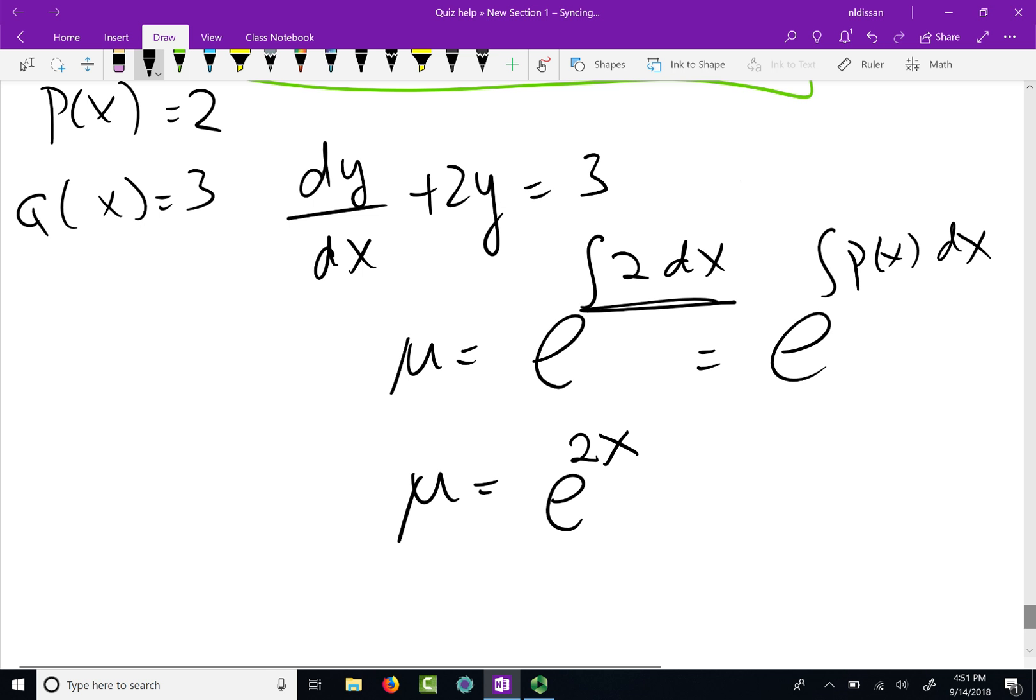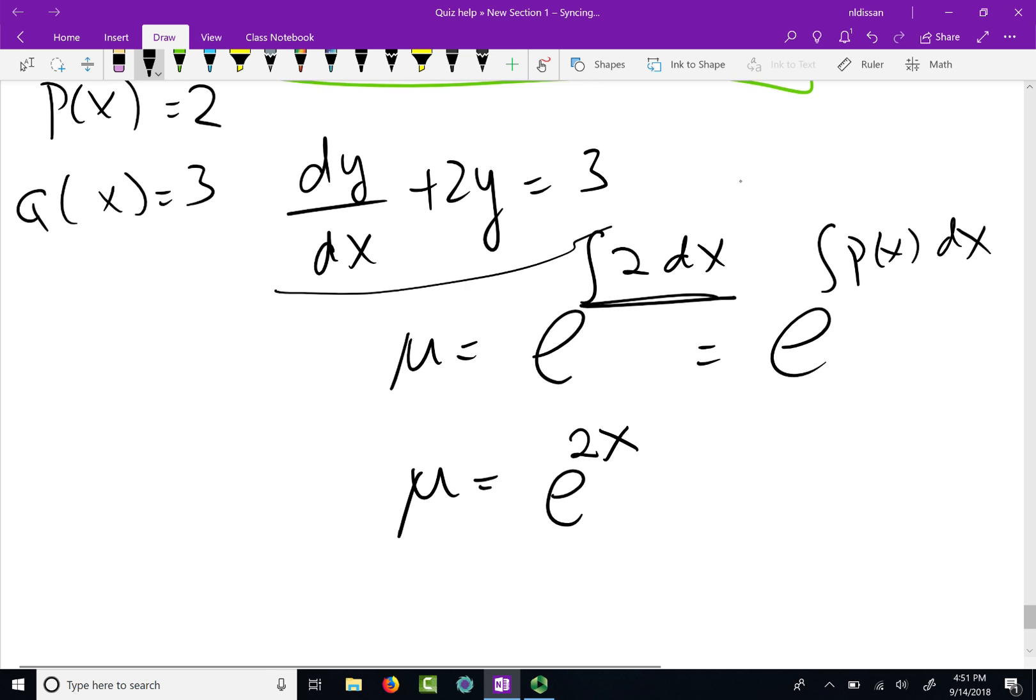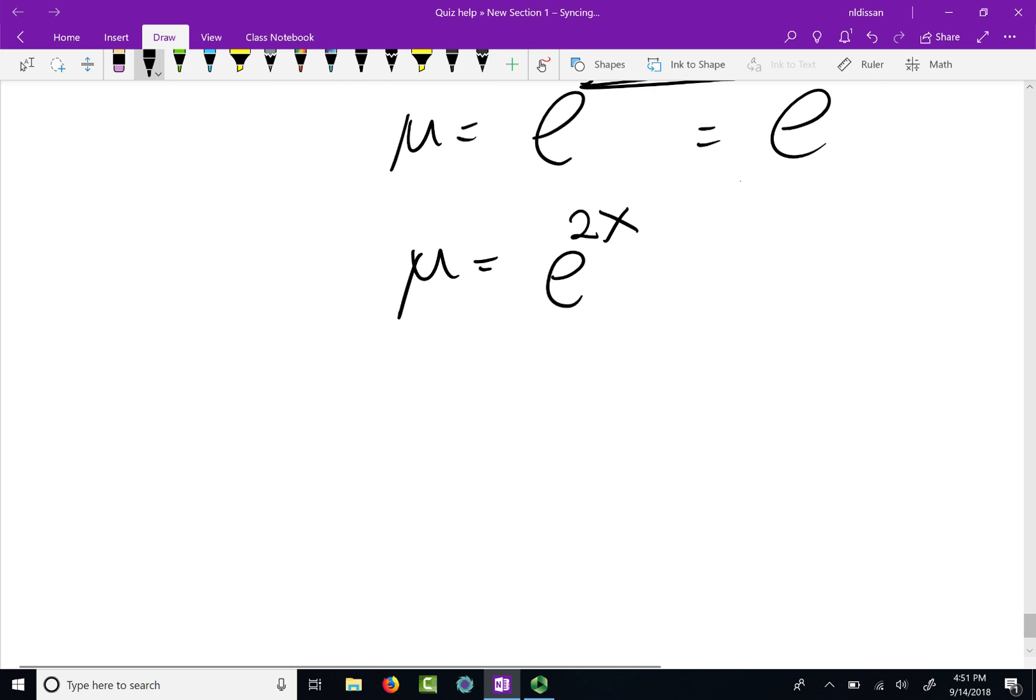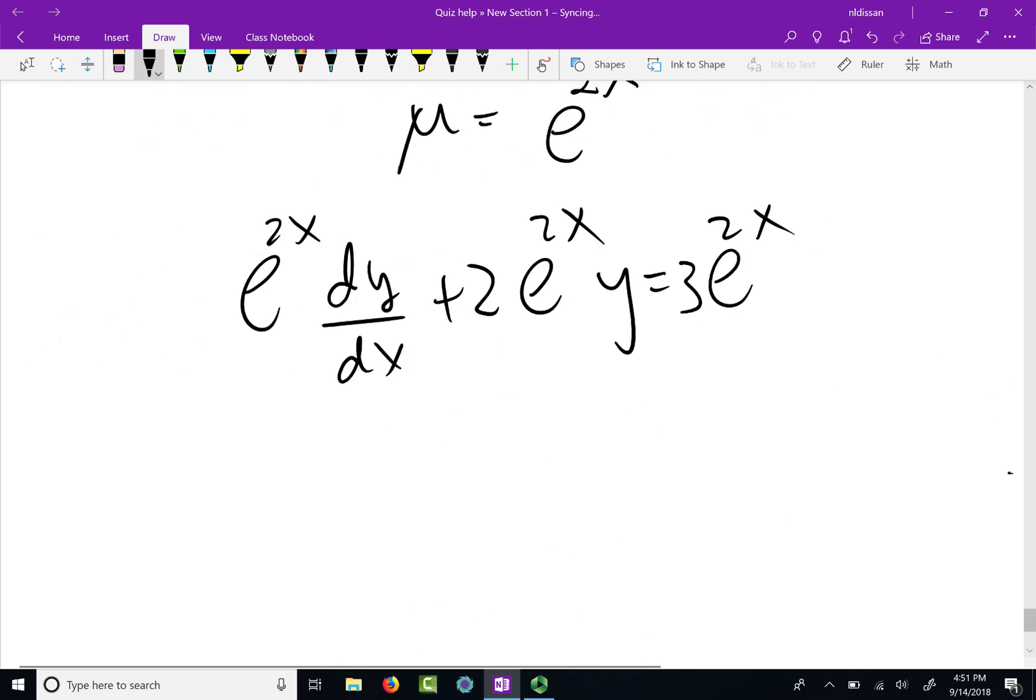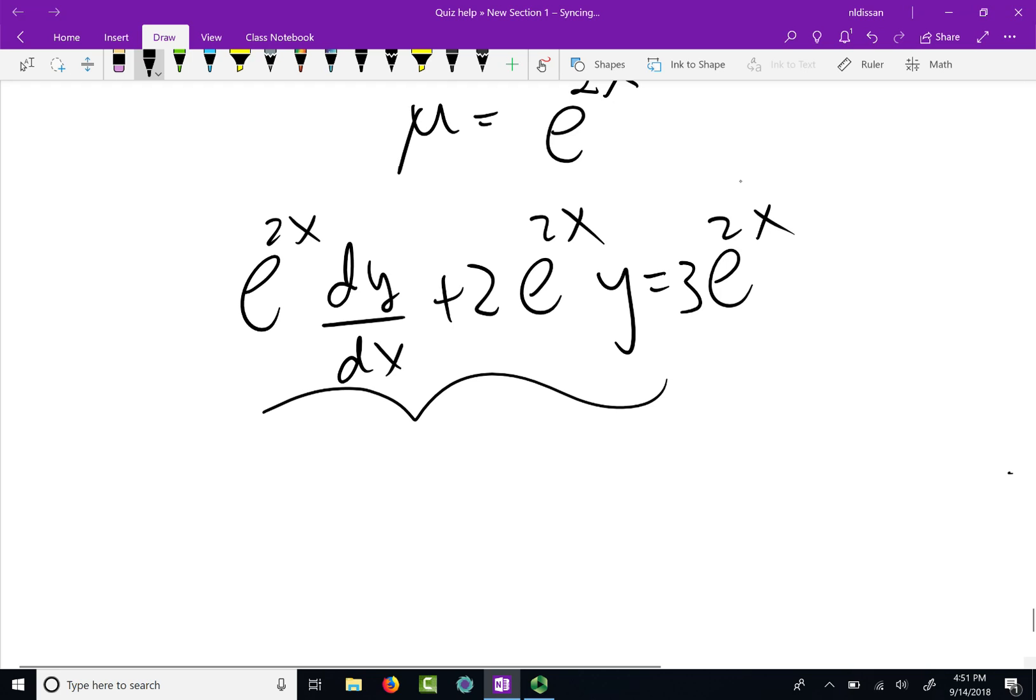Now, if you know integrating factor, let's multiply this equation by μ now. So it's e to the 2x dy over dx plus 2 times e to the 2x y equals e to the 2x times 3. So I multiply the equation by μ. Now this left-hand side will shrink up to what? Integrating factor times y. That's always what happens. We show it in the product rule. And then the right-hand side is 3 e to the 2x.